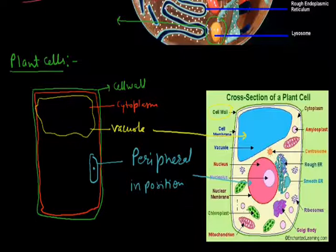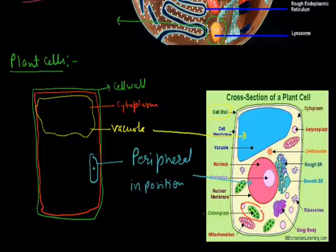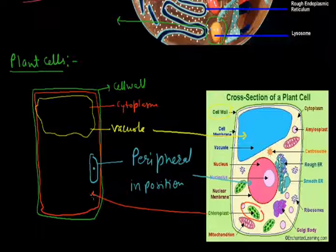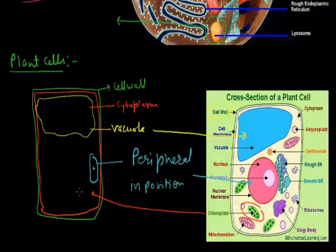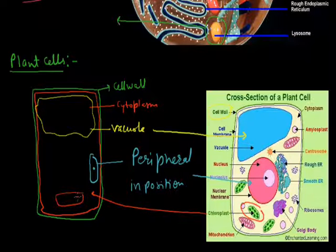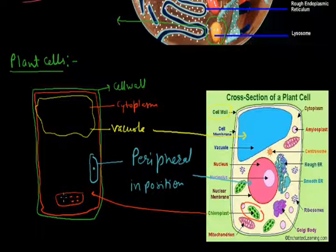Another important structure present in the plant cell is the chloroplast. The chloroplast is responsible for photosynthesis in the plant cell. It is present only in the plant cell and is the second largest organelle in the plant cell.